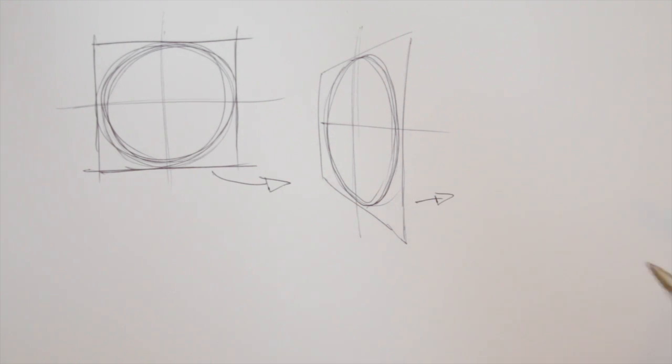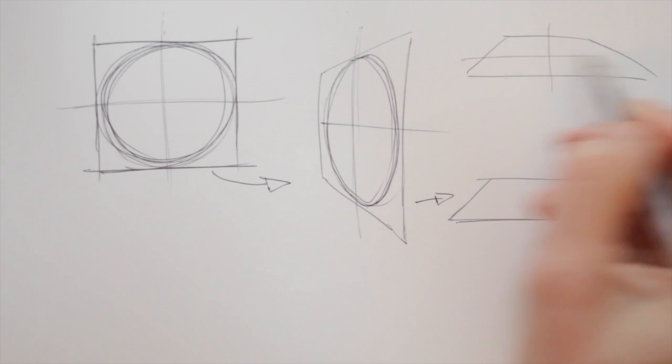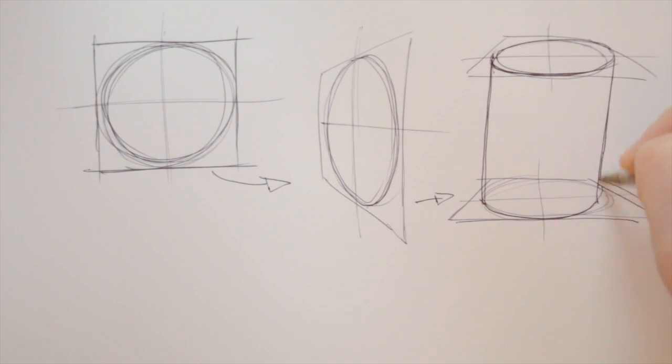Try again? Let's draw two squares, slightly different in perspective. Divide into four, draw the circles in, and connect them to create a cylinder.